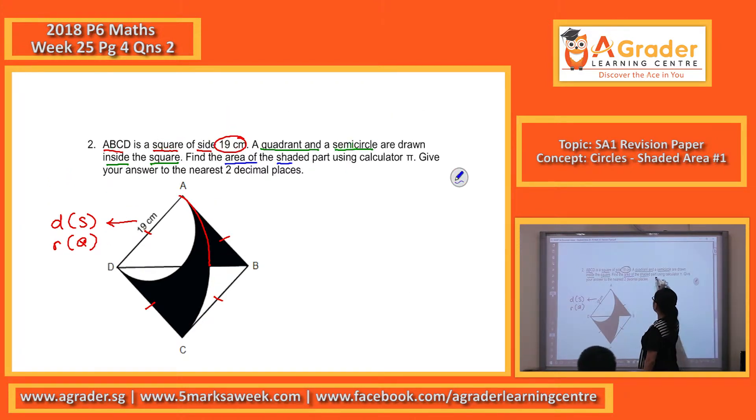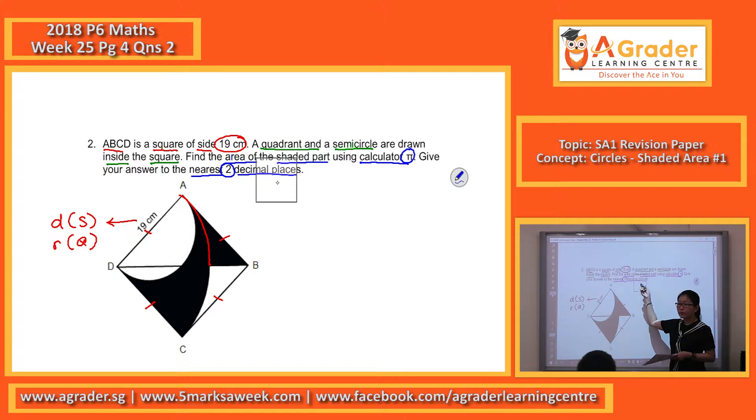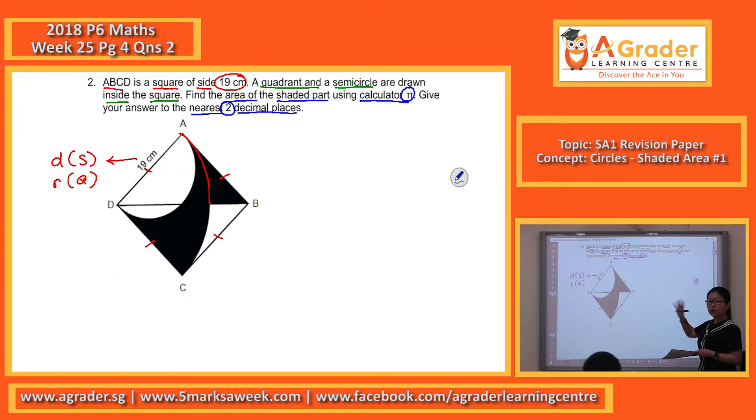So next, we want you to find the area of the shaded part using the calculator pi. And remember to leave your answer to the nearest two decimal places. For this question, I will only round off at the last step. When I'm doing it, I will not round off anything. I will leave the calculator pi as algebraic pi.